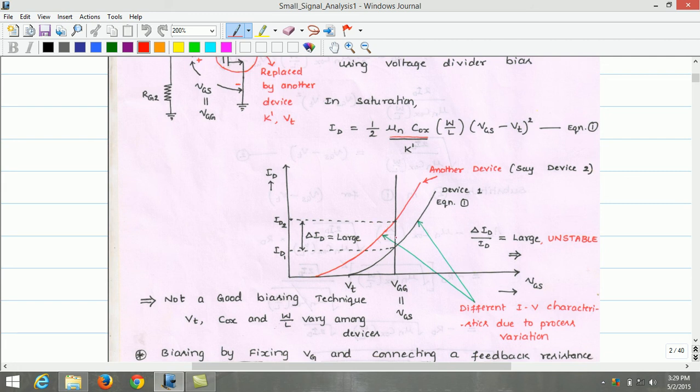Deviation among these two for the fixed gate voltage VGG creates two different drain currents Id1 and Id2. For a VGS fixed or VGG equals VGS, for device 1, let us call the drain current as Id1. For device 2, for a fixed VGG, the current flowing through the MOSFET is Id2. Therefore, delta Id seen from this characteristic is very large. As we have discussed earlier, the ratio delta Id by Id to be smaller for the stable circuit. Since in this biasing technique, we find that delta Id by Id is large, therefore, the biasing scheme using fixed VGS is unstable.